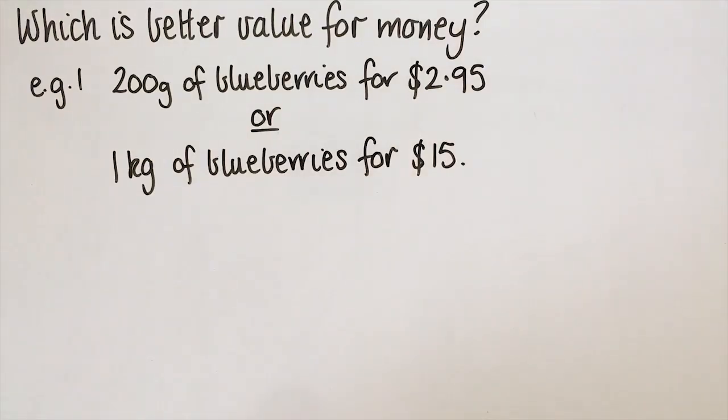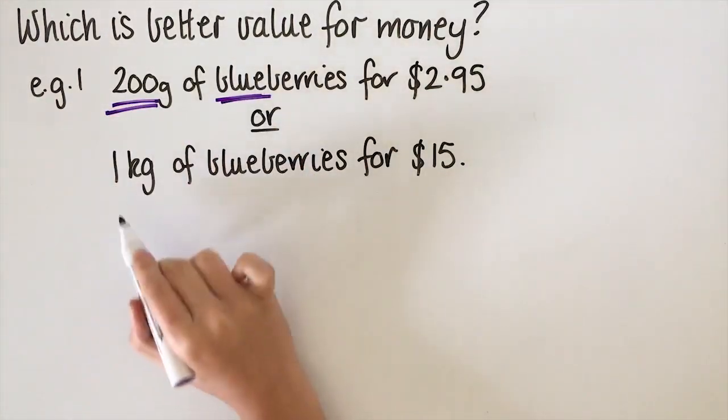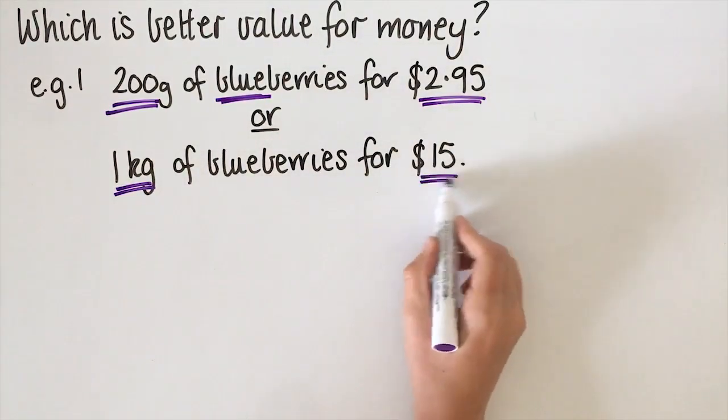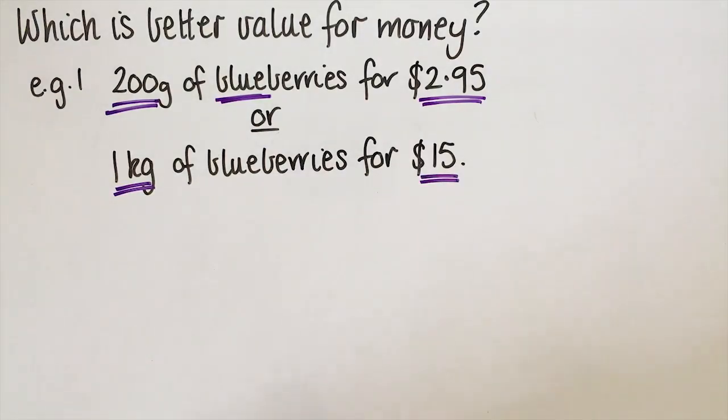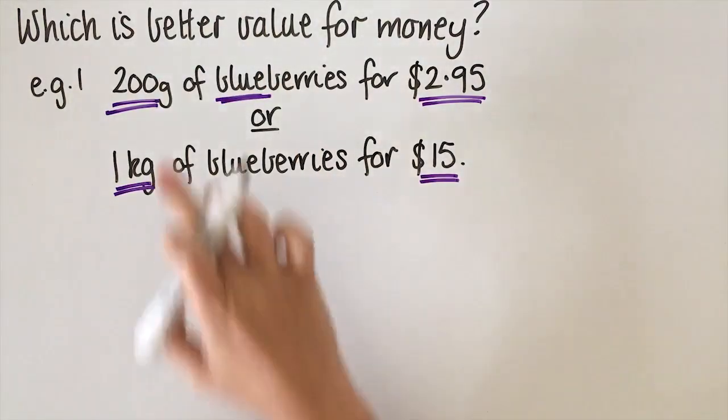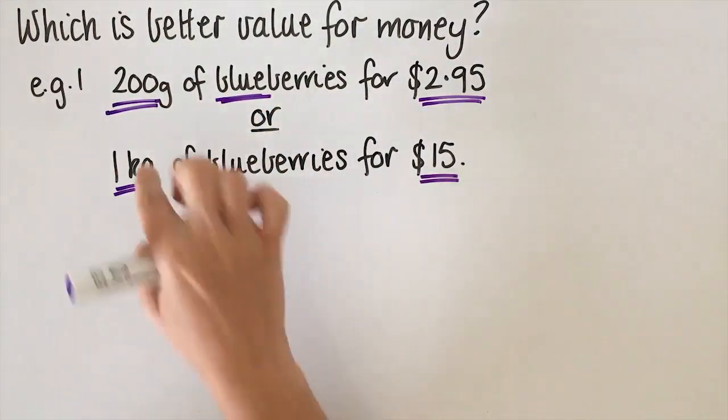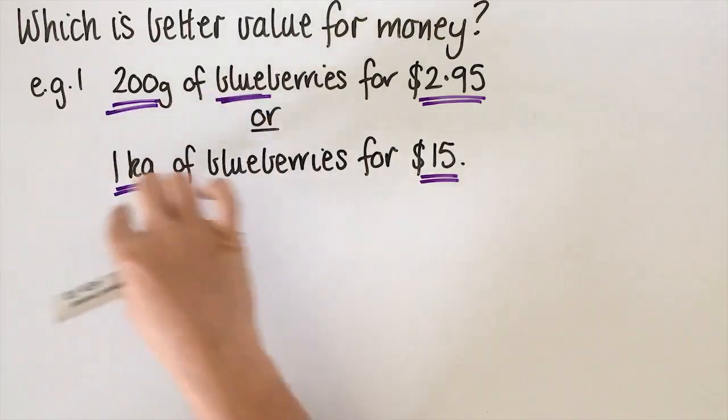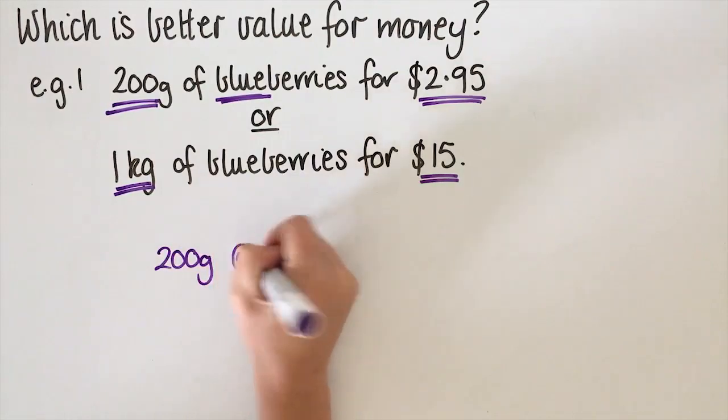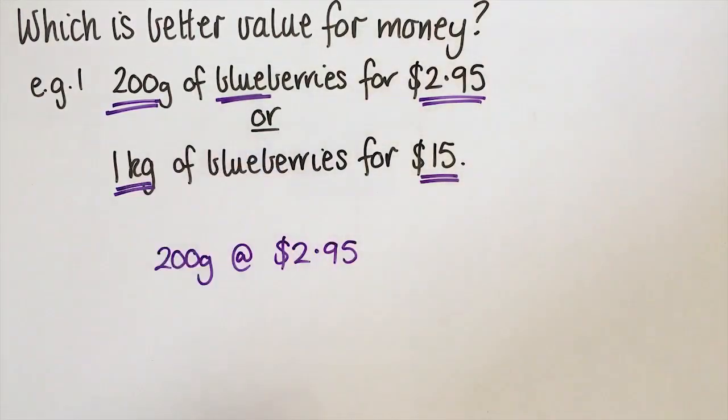So which is better value for money? We've got 200 grams of blueberries for $2.95 or we've got a kilo of blueberries for $15. The first thing we need to do is make the volume the same. 200 grams is not the same thing as a kilo, so we need to make them the same. We're going to turn 200 grams into a kilo. So 200 grams at $2.95 is this top one.